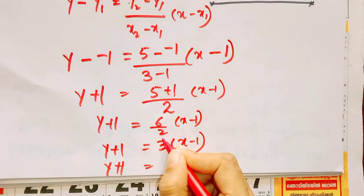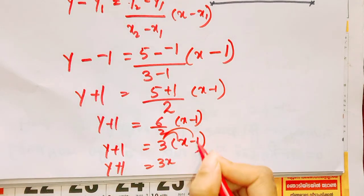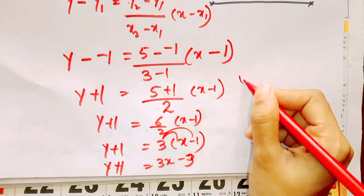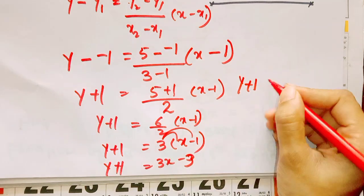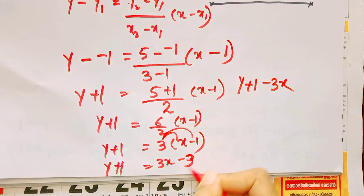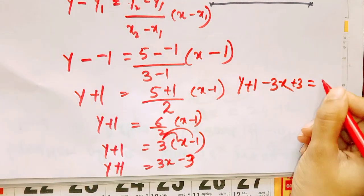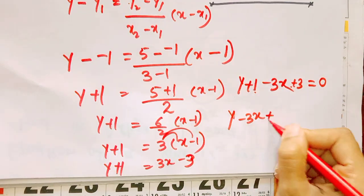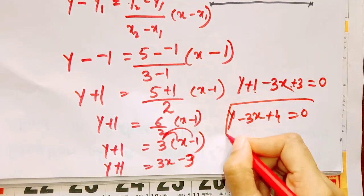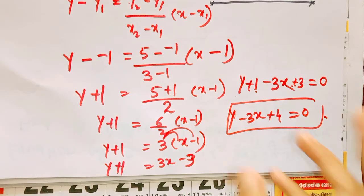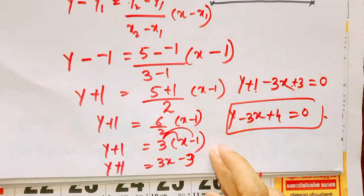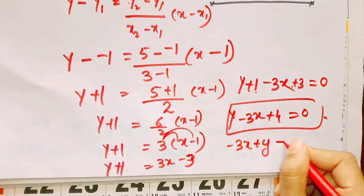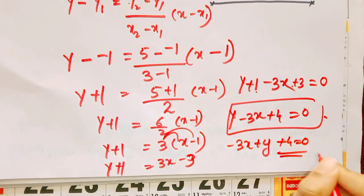So y minus 1 equals 6 by 2 into x minus 1, giving y minus 1 equals 3 into x minus 1. Expanding: 3x minus 3. Rearranging: y plus 1 and 3x minus 3x cancel terms. We get the equation y minus 3x plus 4 equals 0.